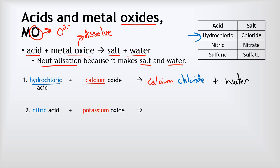Example two: nitric acid reacting with potassium oxide. We look at the base, potassium oxide, to give us our cation — so the salt is going to be potassium something. That something is determined by the nitric acid: nitric acid produces nitrate salts, so this will produce potassium nitrate. And because this is a neutralization reaction, it will also produce water.